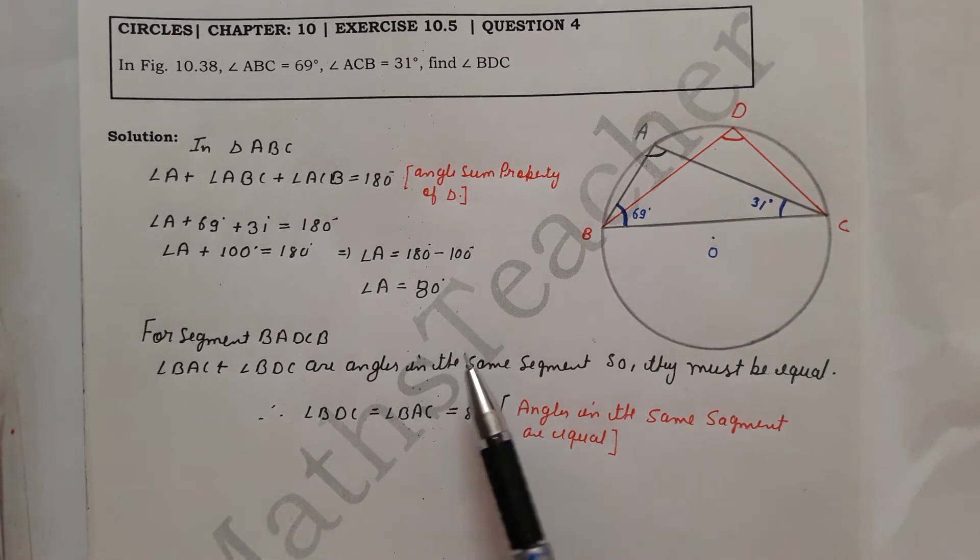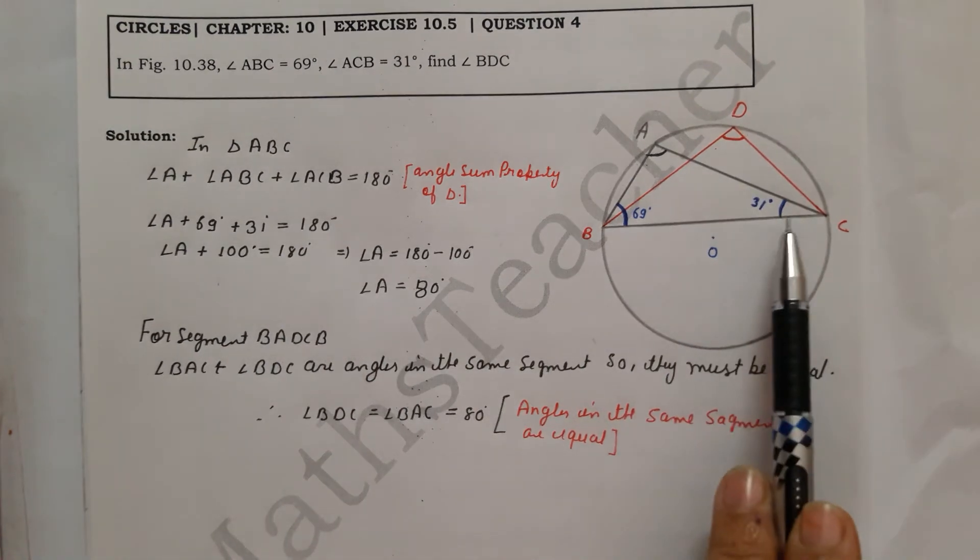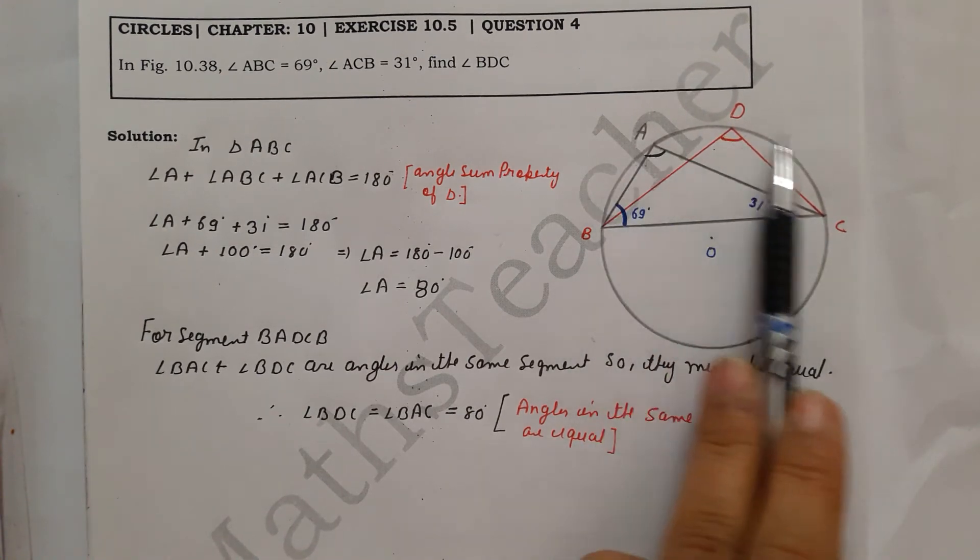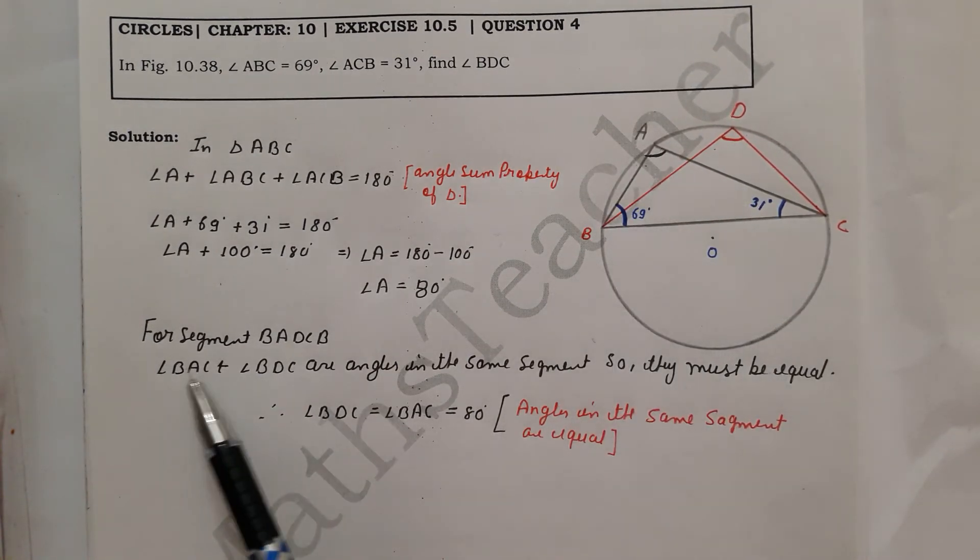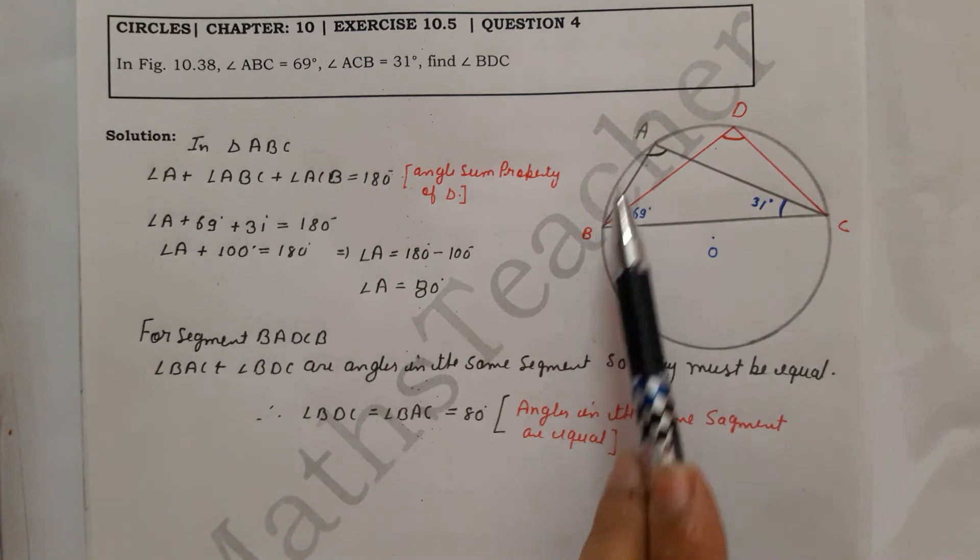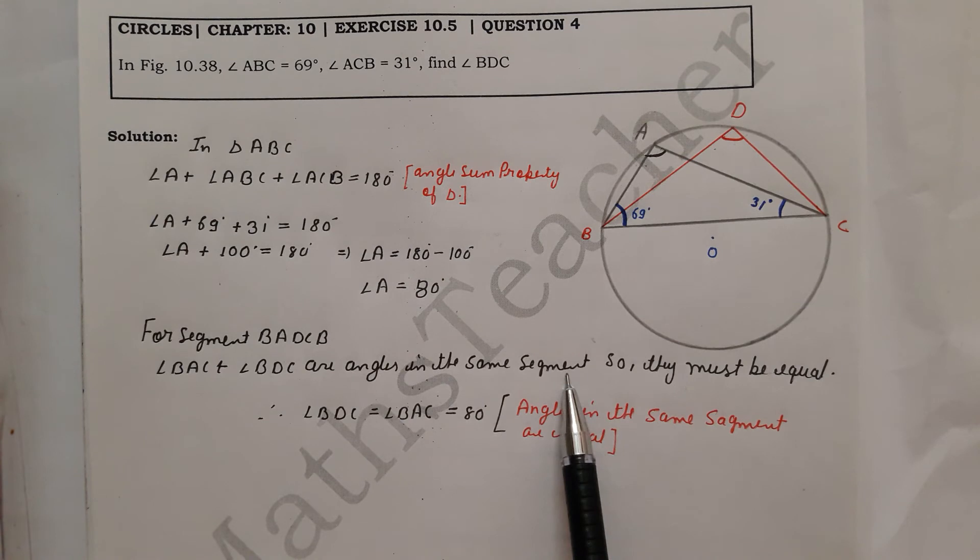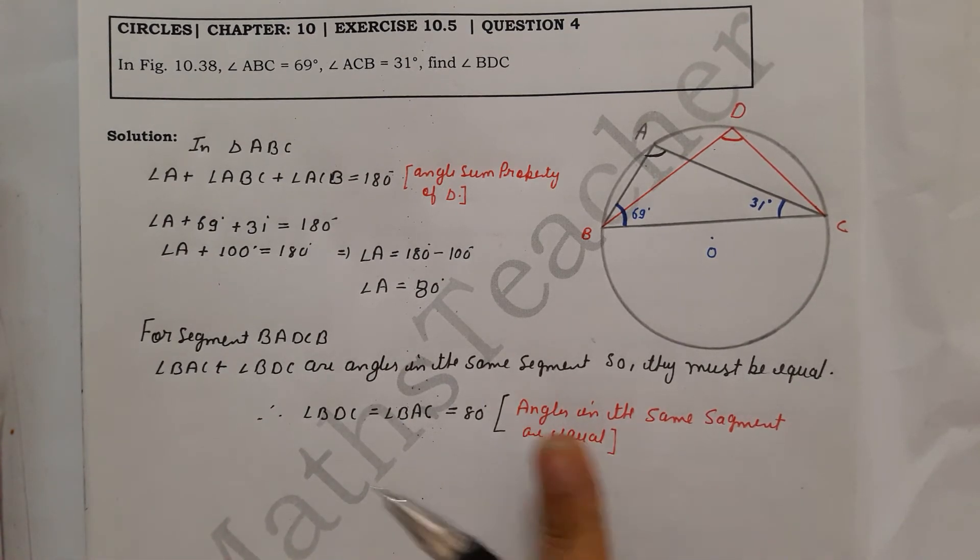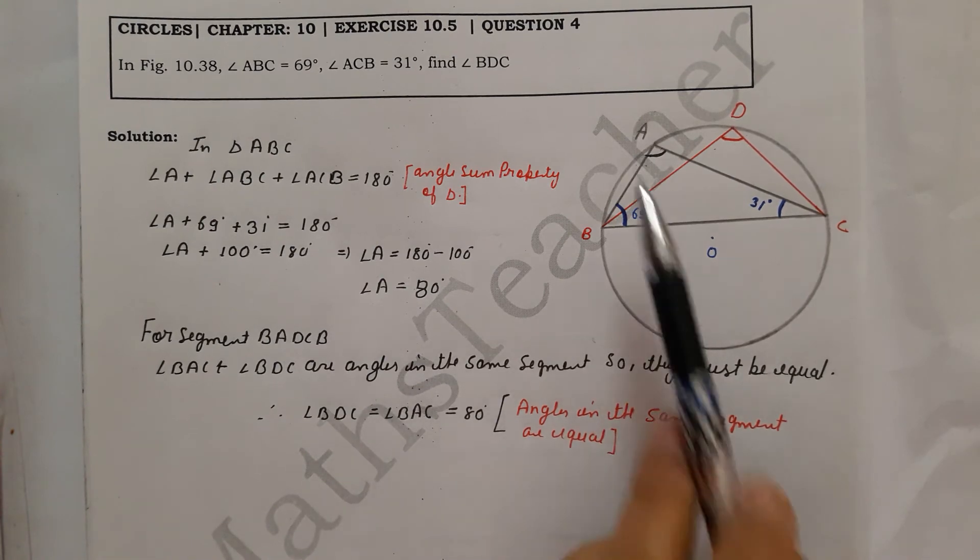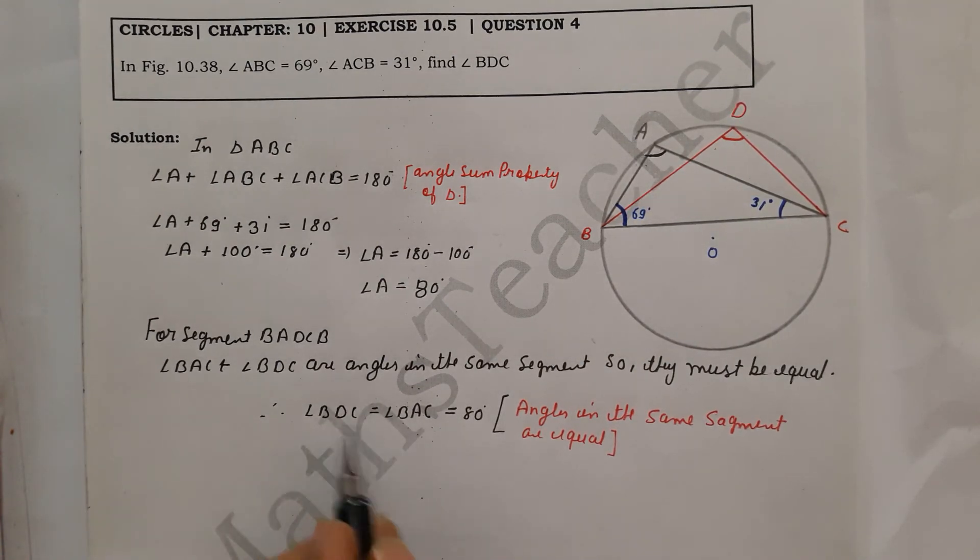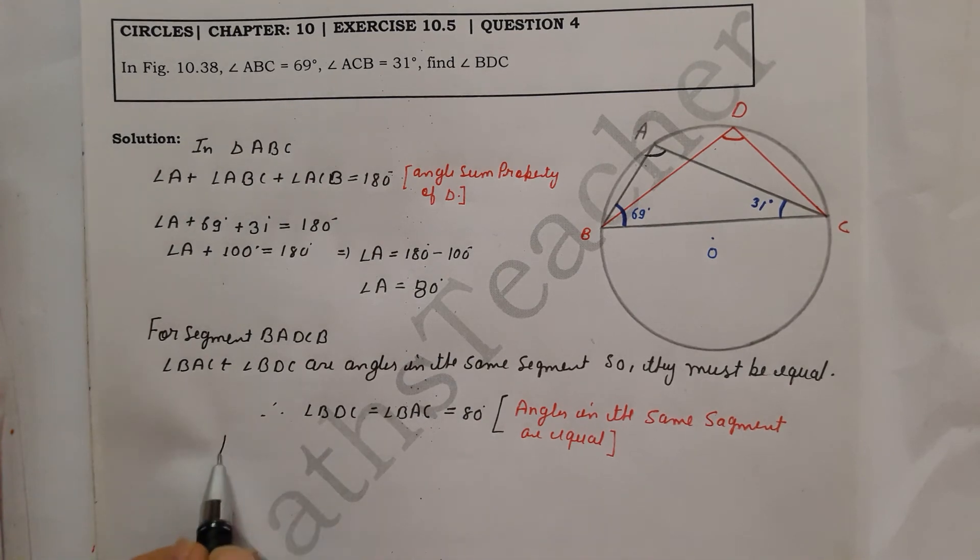Now we find angle D. We write the reason: segment BADC is the minor segment. In that minor segment, you have two angles: angle BAC and angle BDC. These two angles are in the same segment, so they must be equal because angles in the same segment are equal. So angle BDC = 80 degrees.